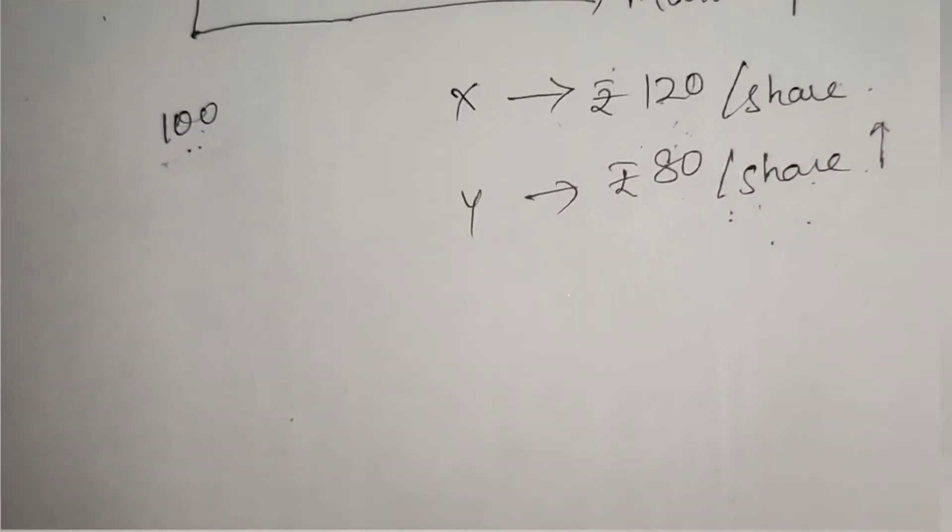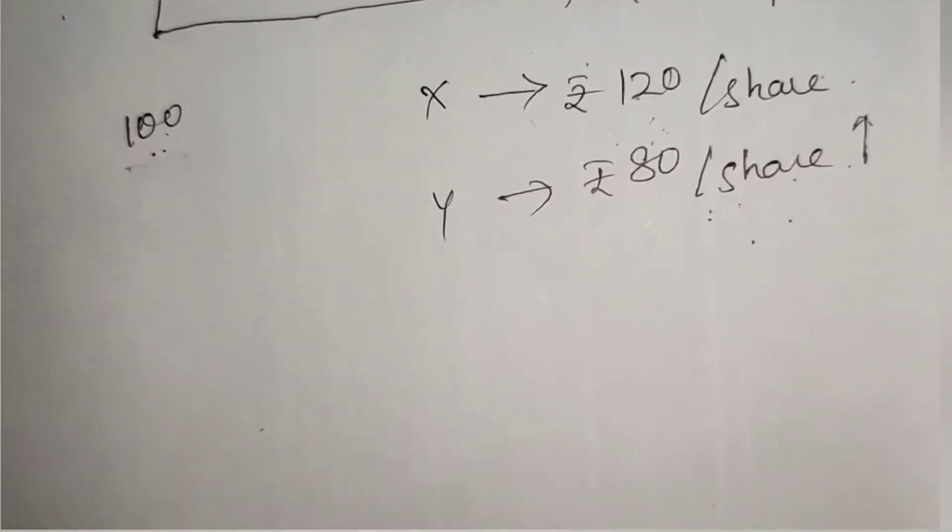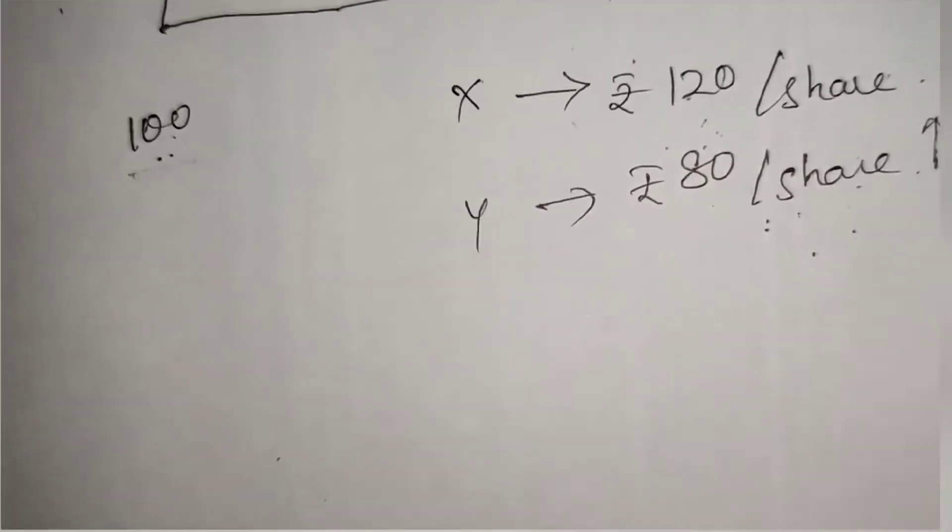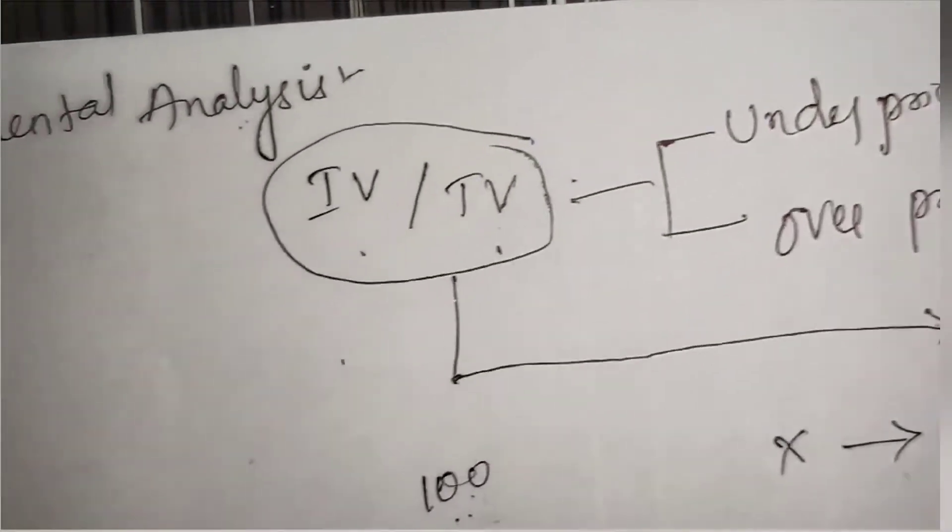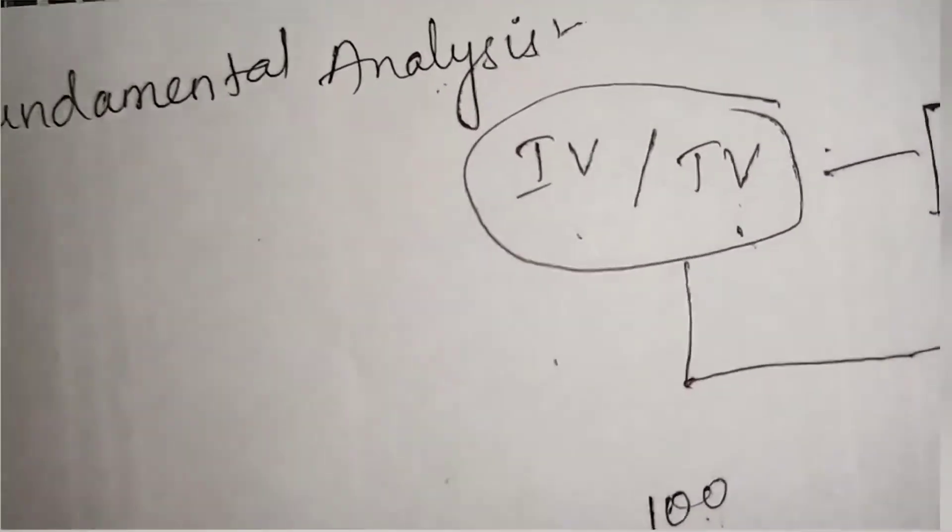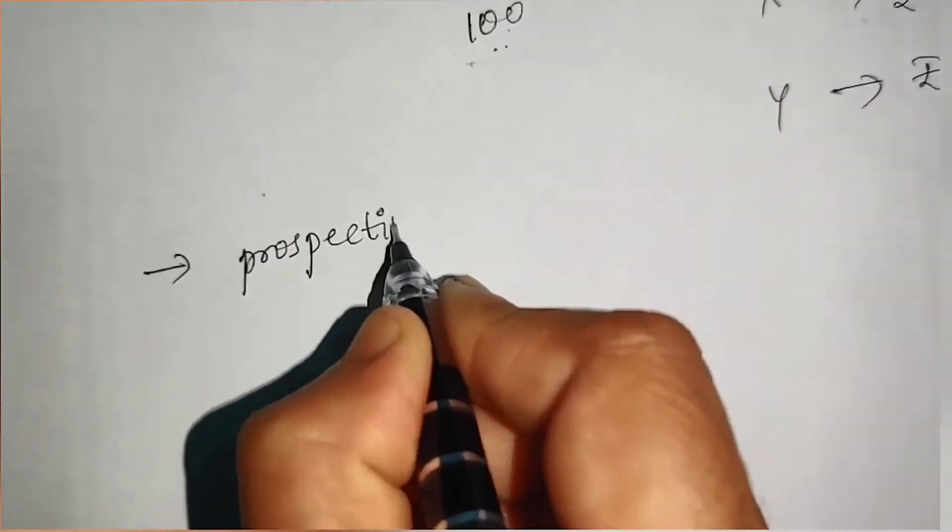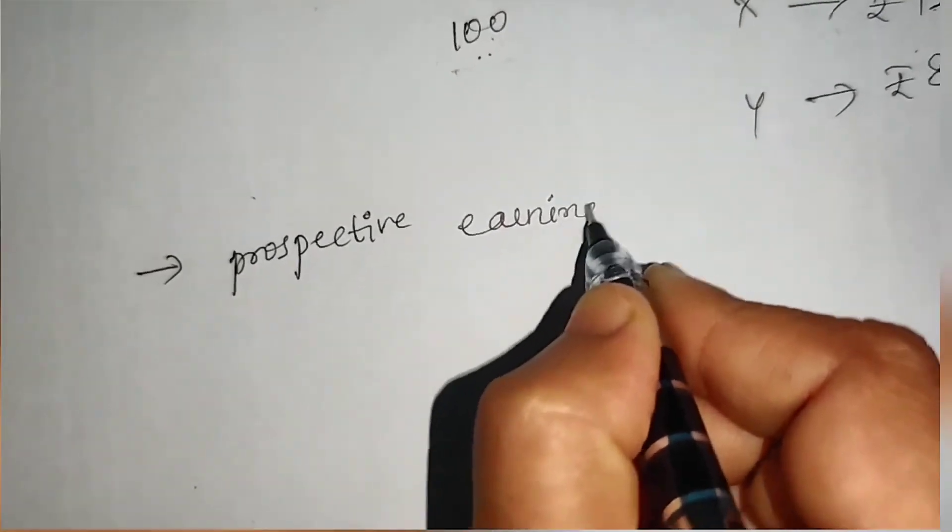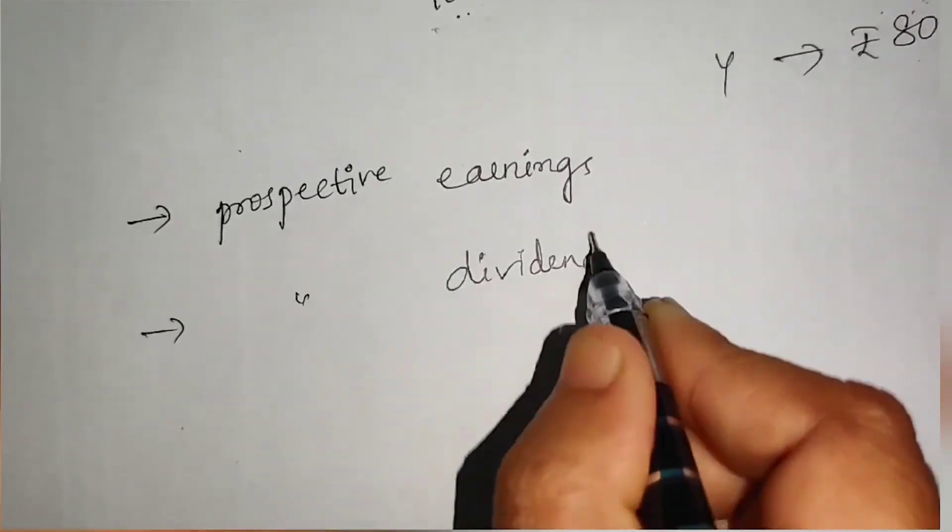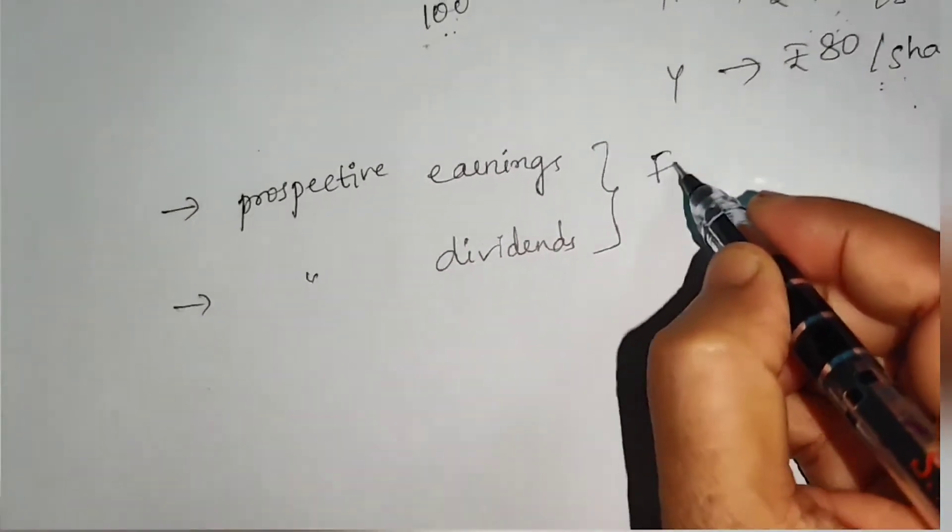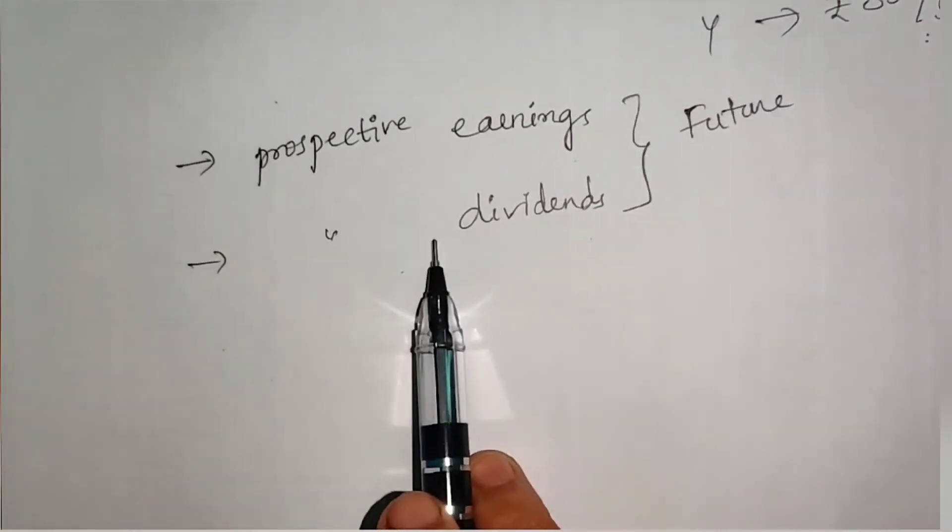What is the intrinsic value of a stock? It is estimated by discounting the company's prospective earnings stream or the shareholders' prospective dividend stream. When I say prospective earnings and prospective dividends, my focus is on future - what I am going to get from the future.